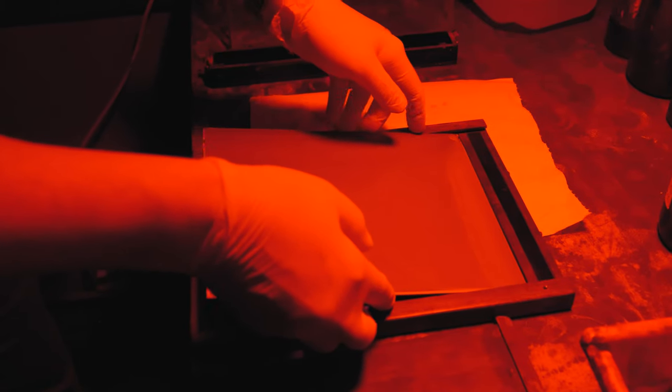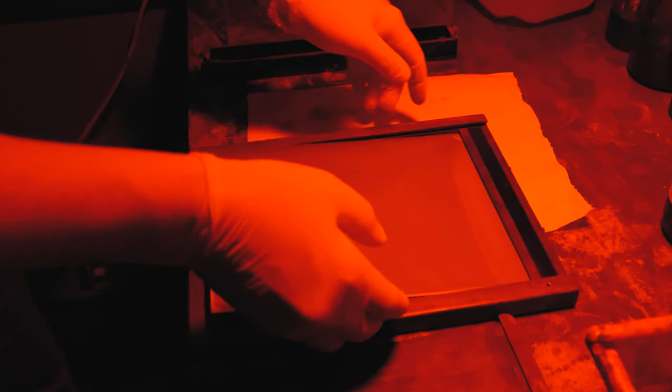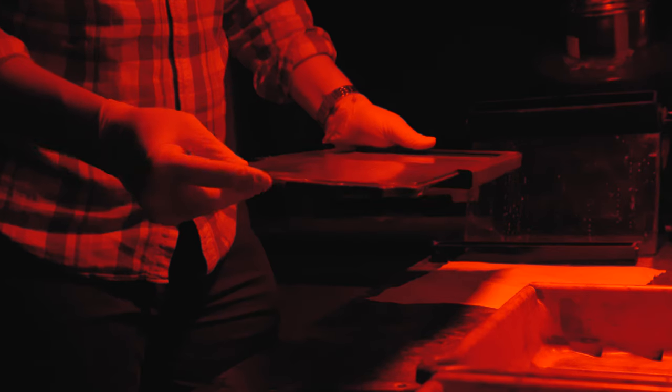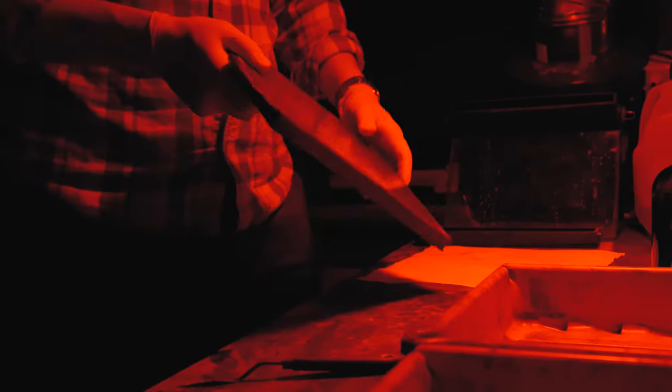So now that our plate is sensitized we'll put it in this special holder called the dark slide. This just allows us to caddy the plate to the camera without exposing it to any light. Now we're ready to take the image.